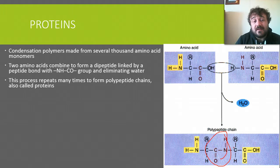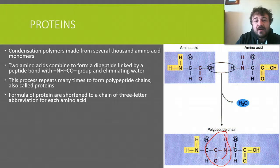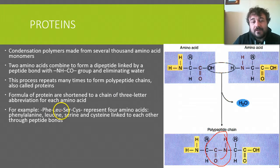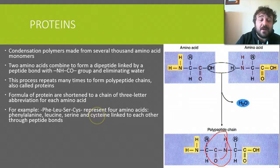This process repeats many, many times — thousands of times — to make these polypeptide chains called proteins. We shorten these to chains of three-letter abbreviations. For example, PHE, LEU, SER, CYS gives you phenylalanine, leucine, serine, and cysteine linked together through peptide bonds — a really small protein, only four units long.